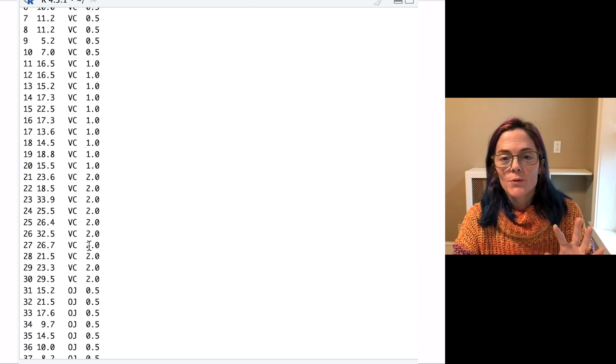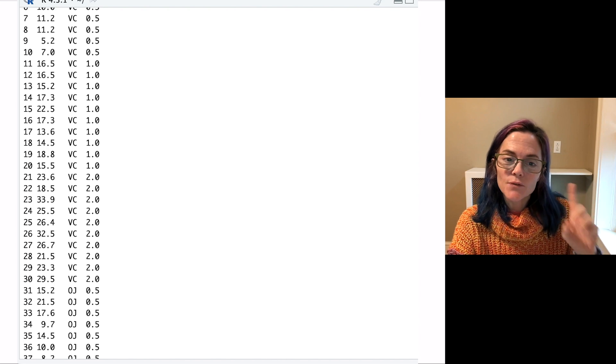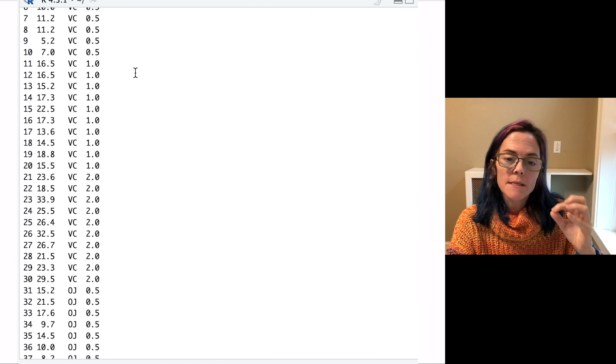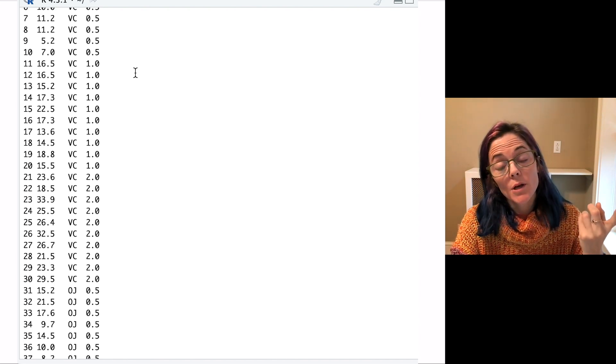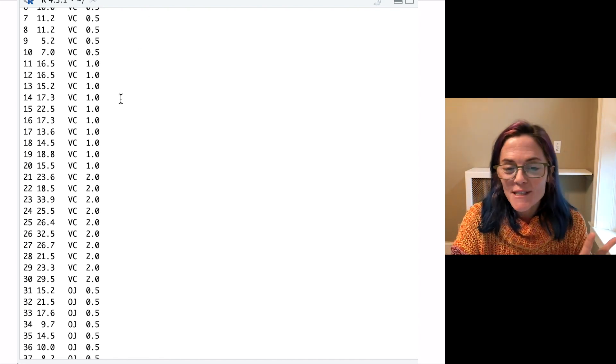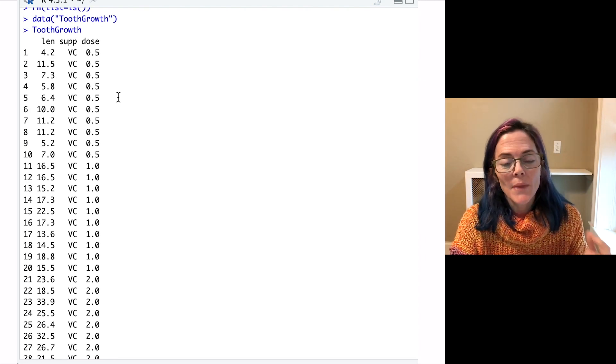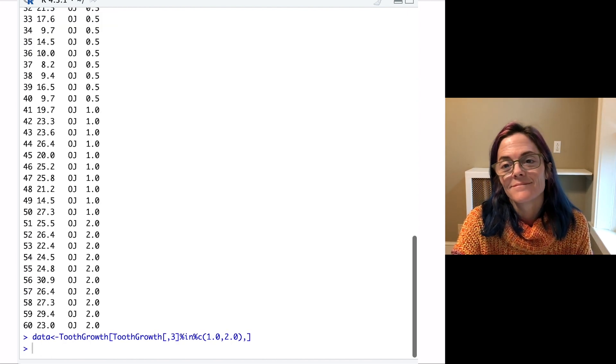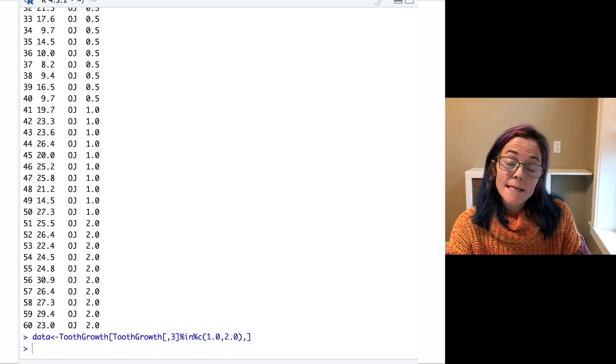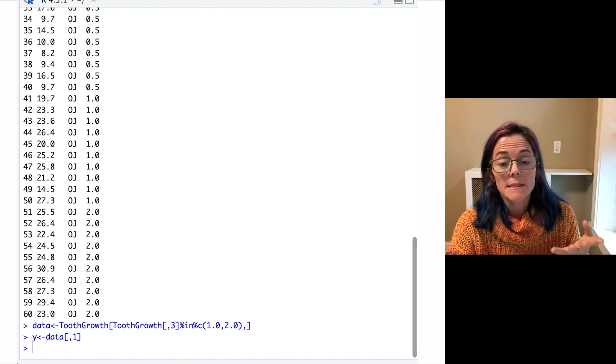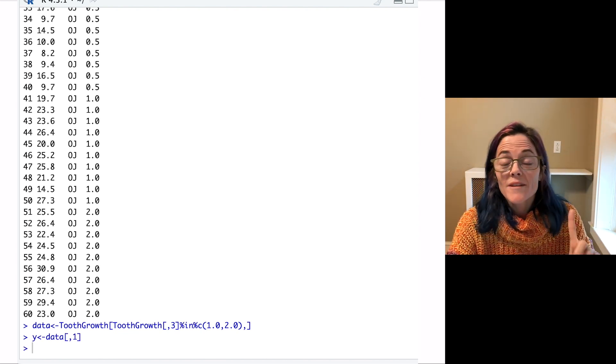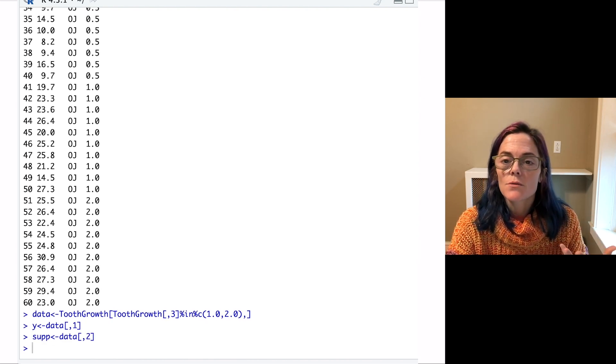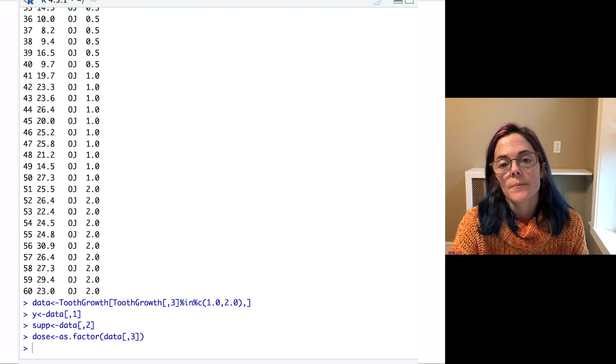The third is the daily dose in milligrams. So we will use two factors. First, the supplement type. We'll use both VC and OJ. And then for dose of vitamin C, I'm going to use one milligram and two milligrams. So the first thing I need to do is pull off the rows that have one milligram or two milligrams in the third column. Then our observations, the Y's, are in the first column. This is the length of the teeth. One factor, the supplement comes from the second column. The second factor, the dose comes from the third column.